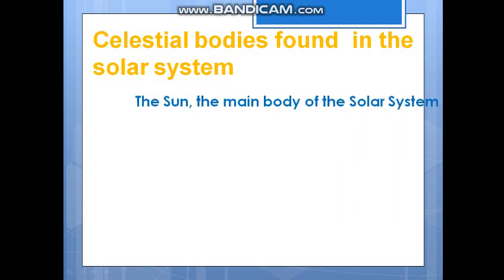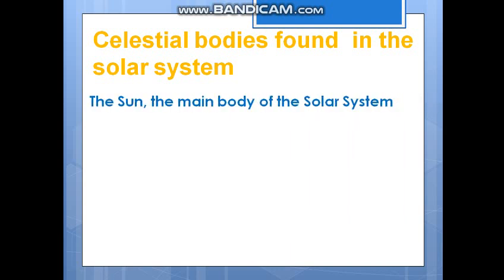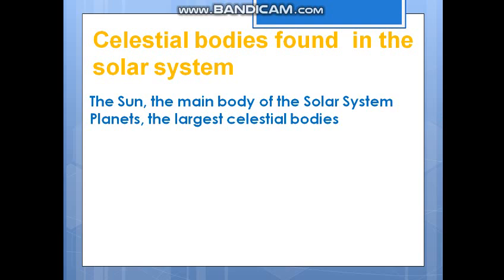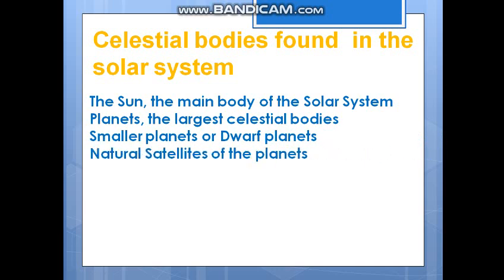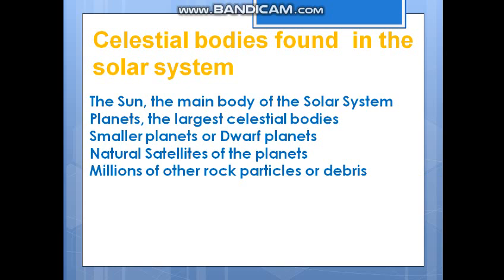The celestial bodies in our solar system include: the Sun, the main body of the solar system; planets, the largest celestial bodies; smaller rocky bodies; natural satellites of the planets; and millions of other rock particles and debris — for example, asteroids, comets, and meteoroids.